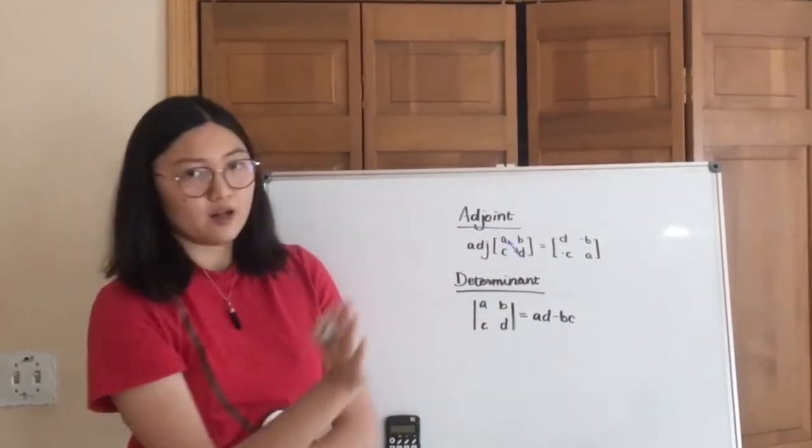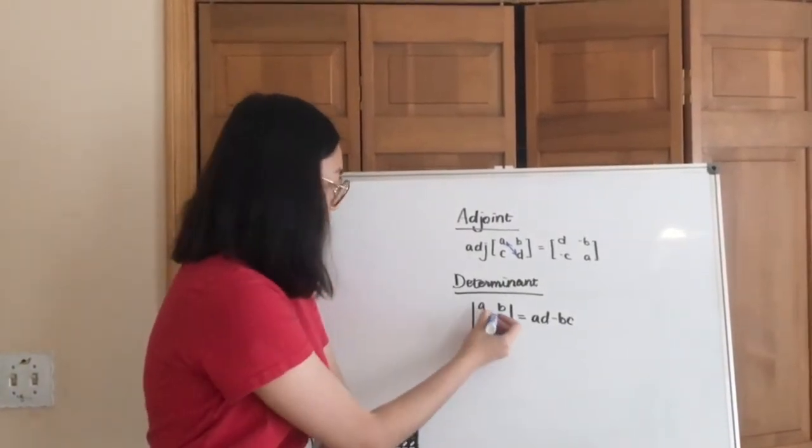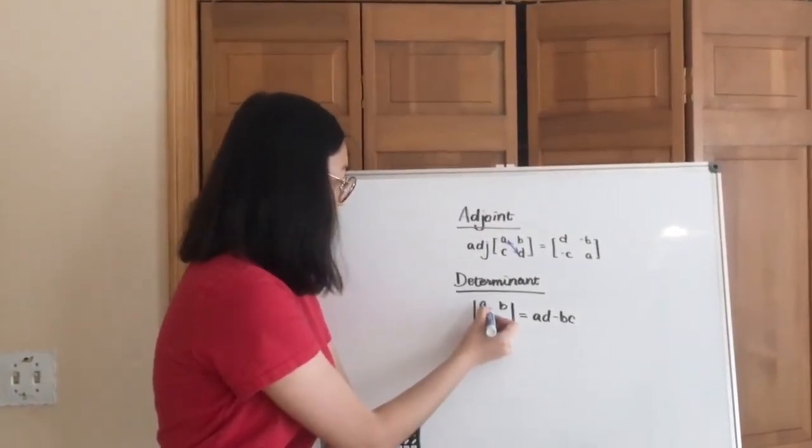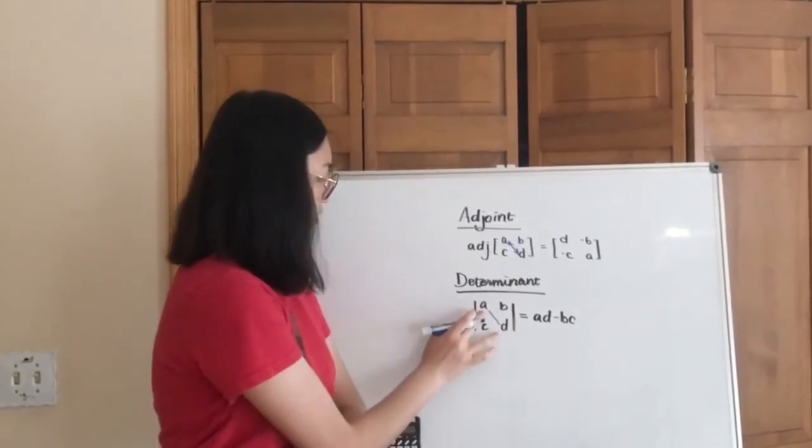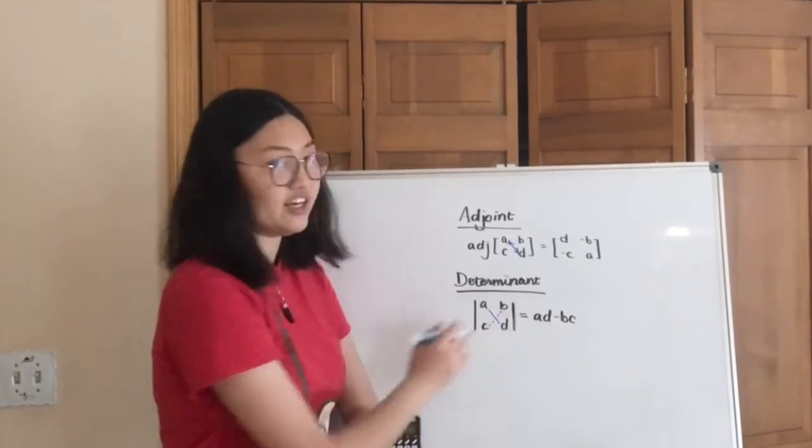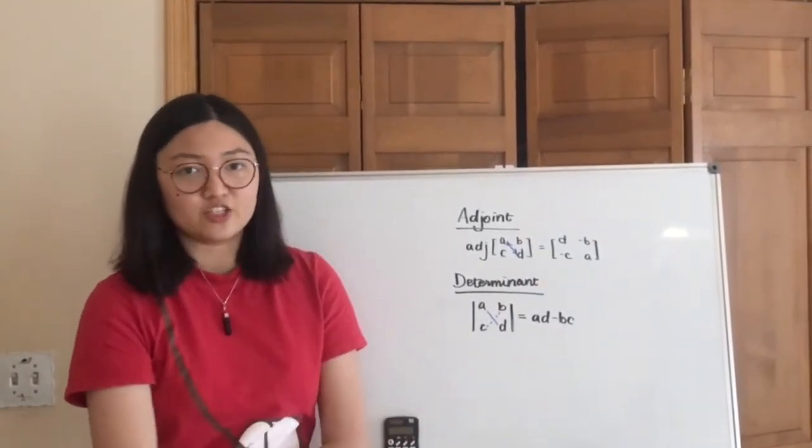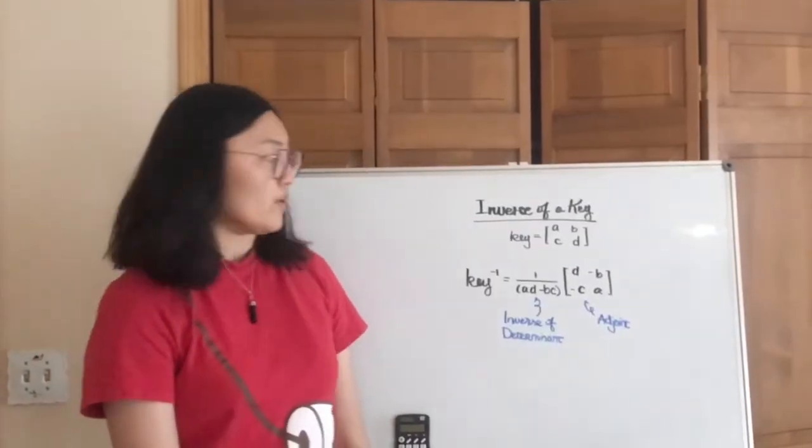And the determinant is a number you can get out of your original matrix by taking the difference between a and d, the two across from each other, and b and c, as shown here. So keep in mind that adjoint is a matrix and the determinant is a number.